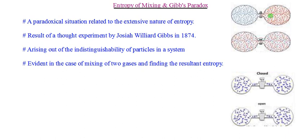The entropy of mixing and the Gibbs paradox are both paradoxical situations related to the extensive nature of entropy. Physical quantities in thermodynamics can be classified into two categories: extensive and intensive. Extensive parameters depend upon the extent, size, number of particles, or volume of the system. If you double the volume and a property also doubles, we call such properties extensive. Entropy, like many other quantities, is one of the extensive quantities — that is a well-established fact.